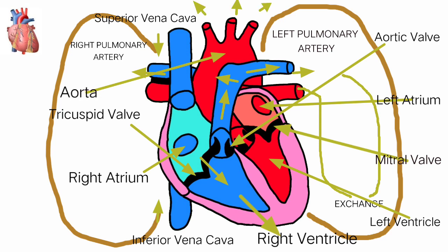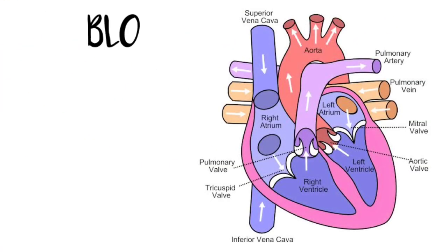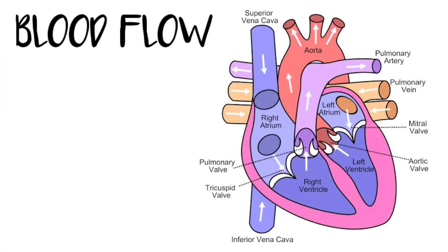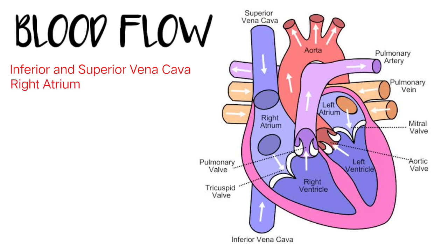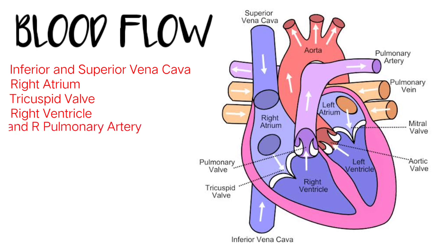After the aortic valve, the blood enters the giant vessel called the aorta, which is where the blood is distributed to the rest of our body. To summarize, the flow of blood in our circulatory system starts in the inferior and superior vena cava, then goes to the right atrium, tricuspid valve, and right ventricle.